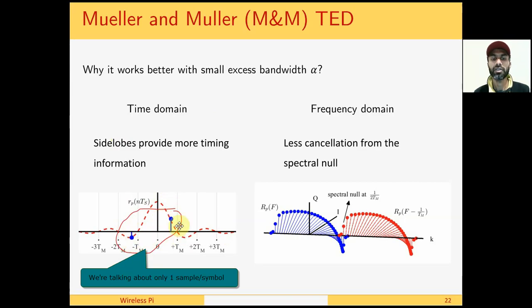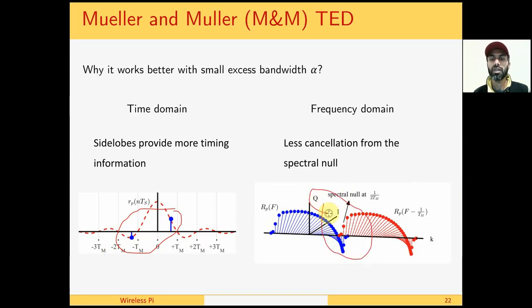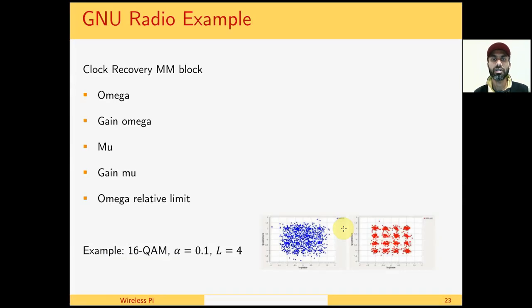In frequency domain, this effect can be seen from the spectral cancellation. When the excess bandwidth is large, there is more cancellation that happens in this region. When the excess bandwidth is small, there is very little cancellation that happens in this region.